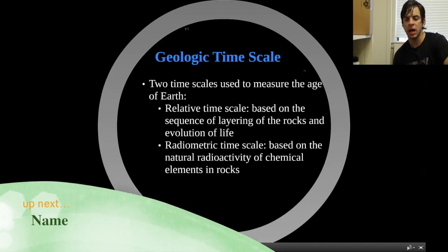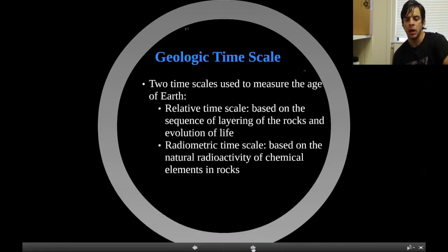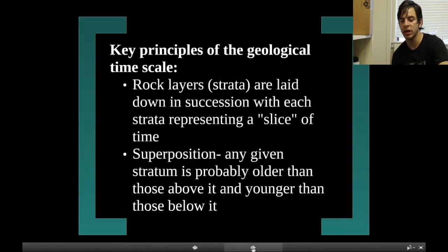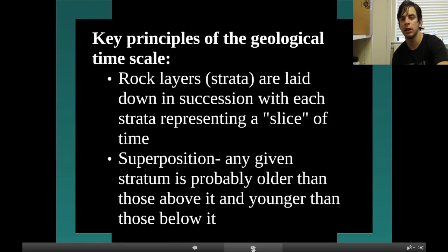First, the geologic timescale. There are two timescales used to measure the age of the Earth. First is the relative timescale, which is based on the sequence of layering of the rocks and evolution of life. Second is the radiometric timescale, which is based on the natural radioactivity of chemical elements in rocks.